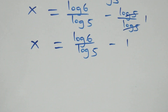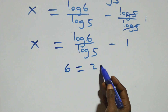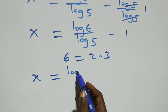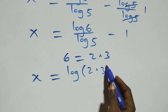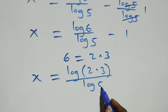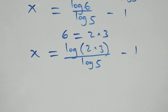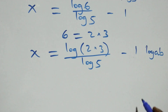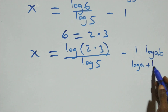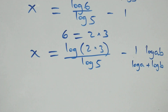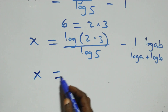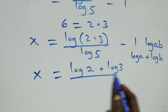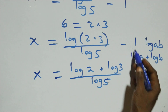Then next step here, also we can write 6 as 2 times 3. Which implies here we have x equals to log of 2 times 3, over log 5, then minus 1. This follows the law of logarithm when we have log A times B, which is the same thing as log A plus log B. So what we have here becomes x equals to log 2 plus log 3, over log 5, then minus 1.